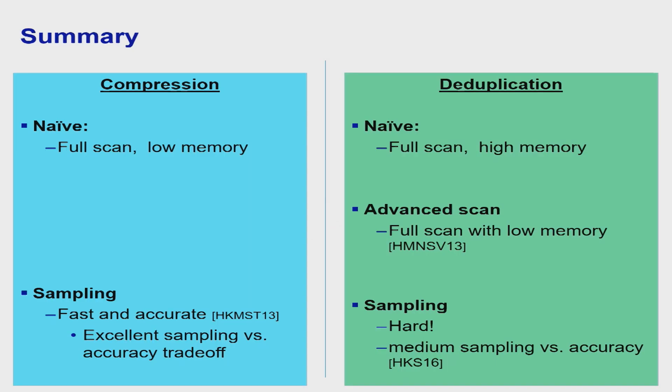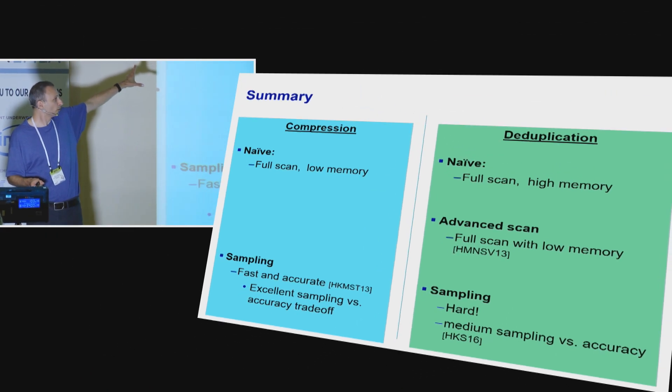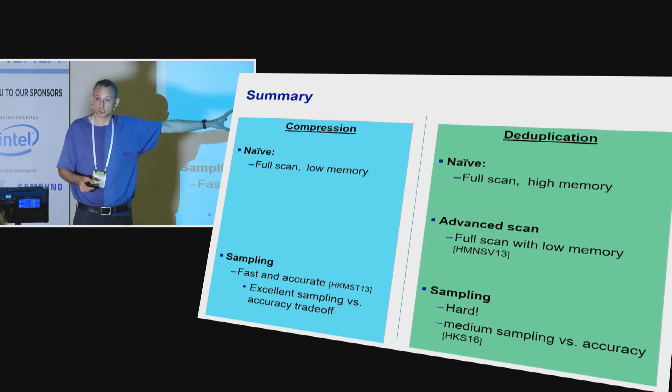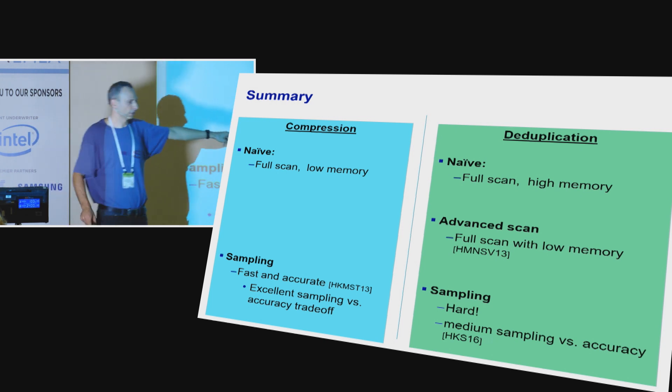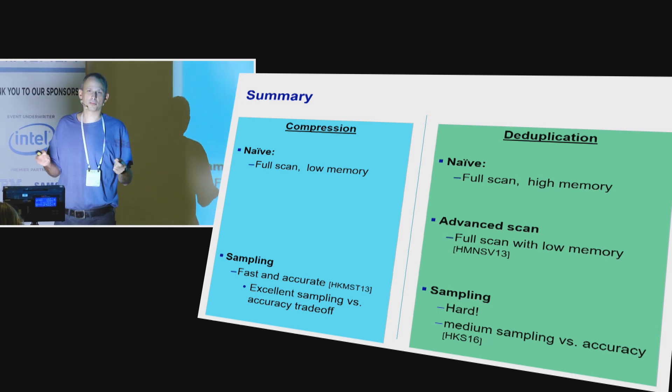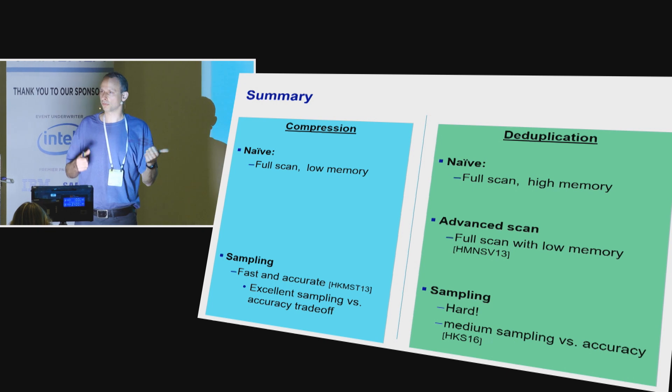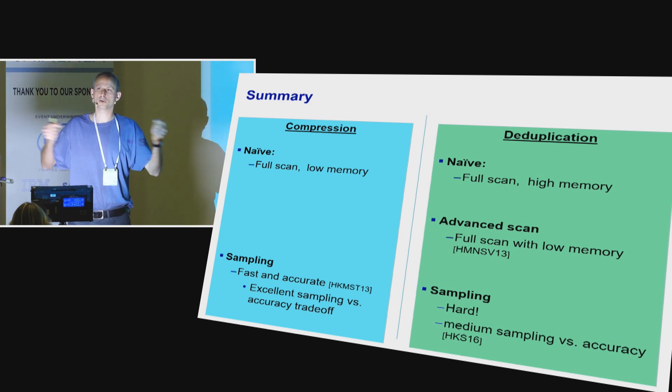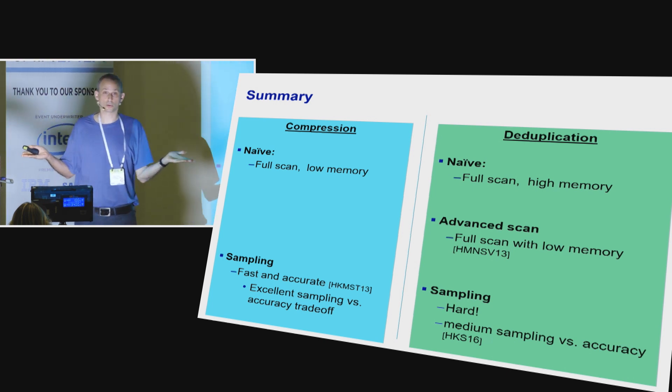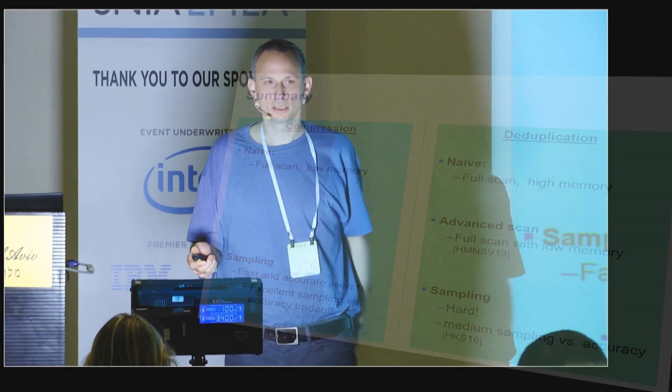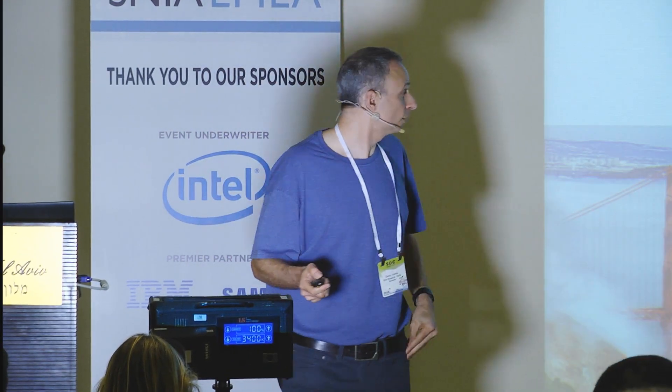So, summary, we're at the end. We have compression, which is relatively easy. You can do fast. You can do accurate. Deduplication is much more complex. And we have tools for this as well. Again, this sampling is really cool, but many times you're going to have to sample 15% of your data. And now you have to do the calculation of 15% random reads versus full scan. What's quicker? It depends on the media you're working with. So, if it's all on flash, go with the 15%. You're saving a lot of time. That's about it. Thank you.